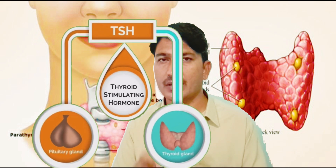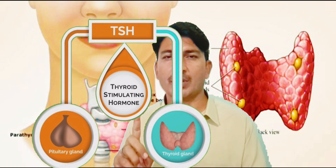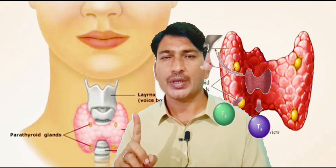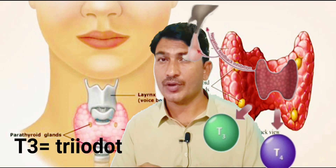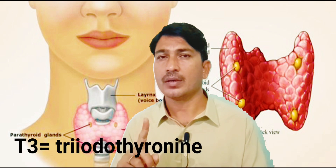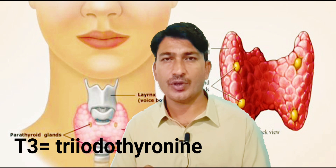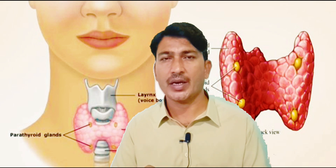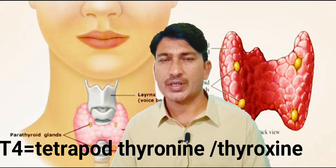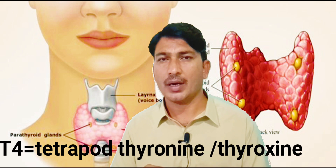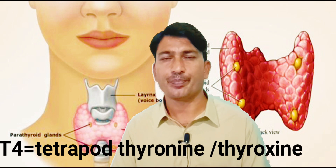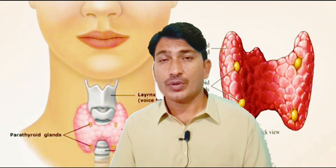When the thyroid gland is activated, it releases two important hormones. Number one is T3, also known as triiodothyronine — it is called triiodothyronine because it contains three molecules of iodine. The second hormone is T4, also known as tetraiodothyronine. The third name of T4 or tetraiodothyronine is thyroxine hormone.